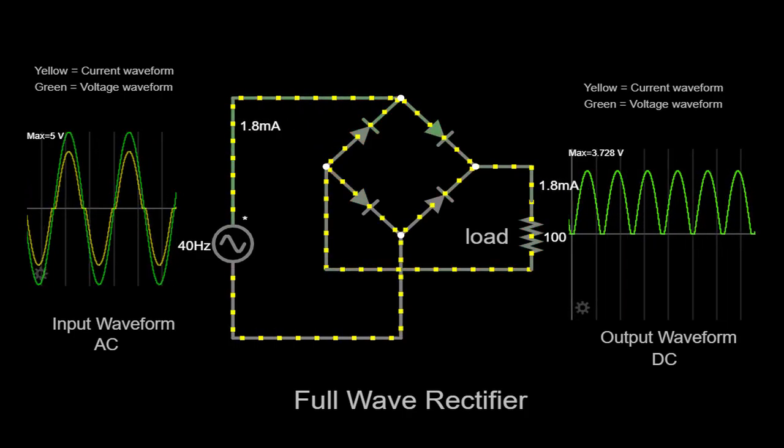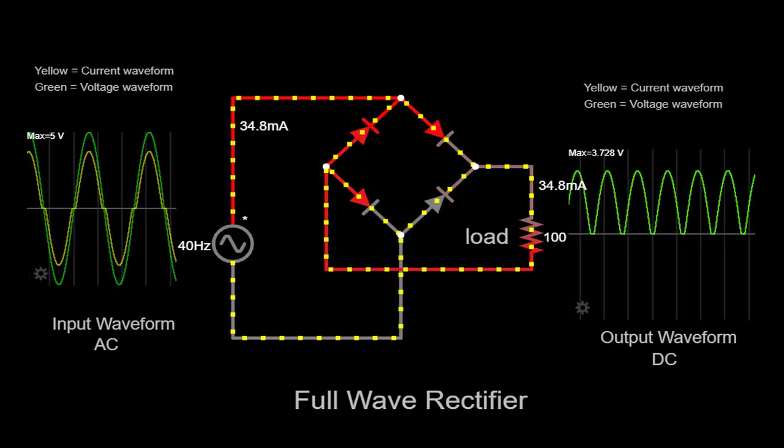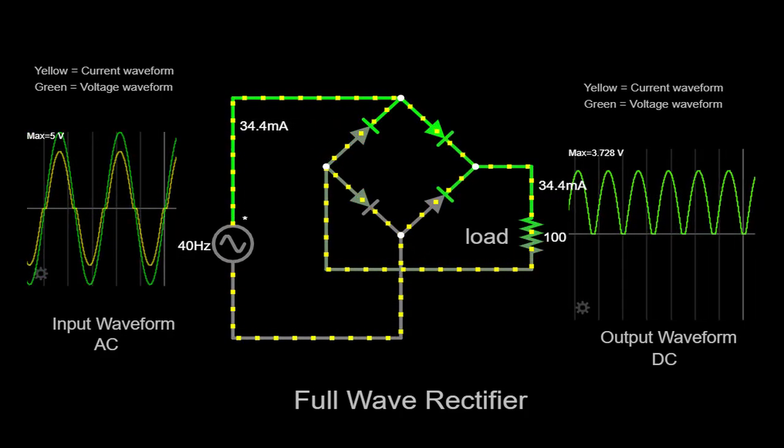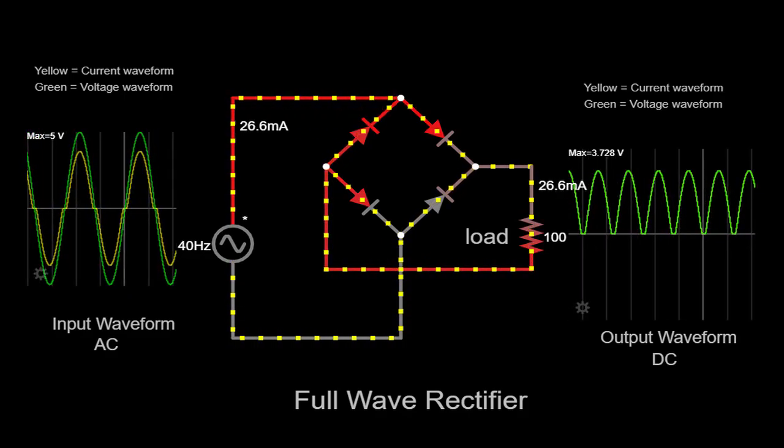Now, let's delve into the current flow within the full-wave rectifier circuit. During the positive half cycles of the input voltage, the diodes are forward biased, allowing current to flow through them and the load resistor.